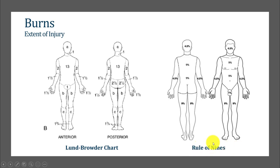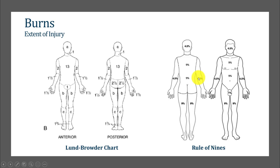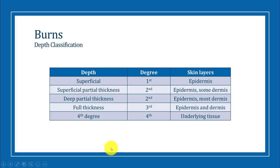The Rule of Nines assigns a surface area of nine percent to most body parts. The legs are nine percent, the bottom of the back and the abdomen are nine percent, and the chest and top of the back are nine percent. The head and the arms are each four and a half percent. Most people use the Rule of Nines, whereas the Lund-Browder chart is the more precise method.